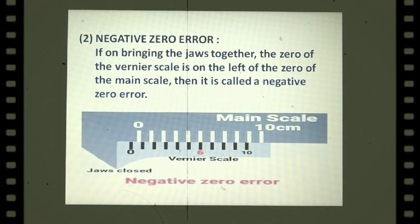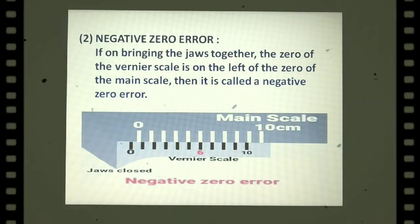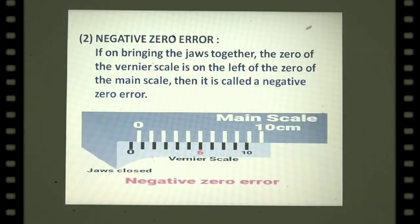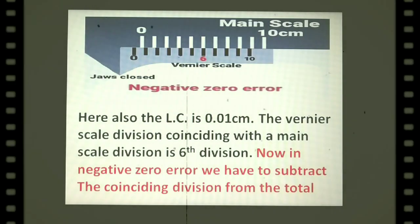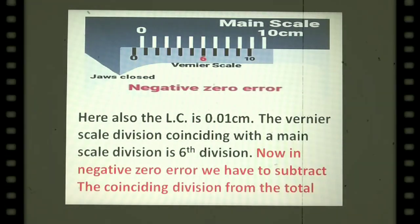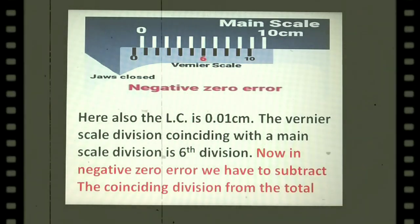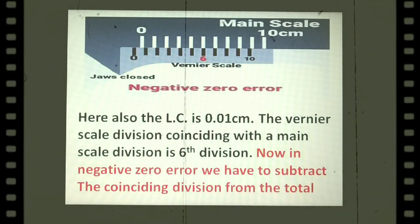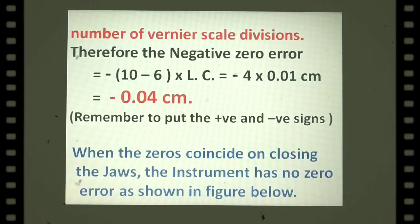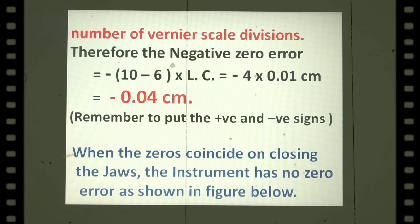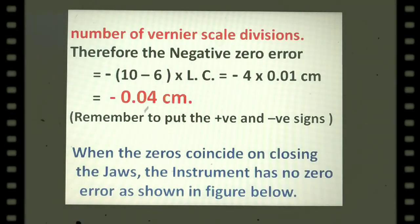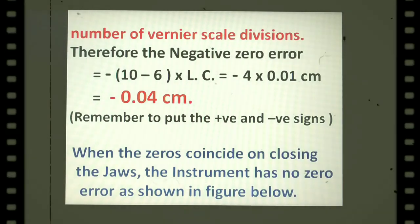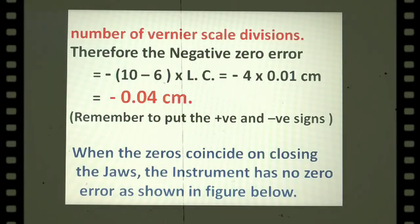Negative zero error: if on bringing the jaws together the zero of the vernier scale is to the left of the zero of the main scale, it is called a negative zero error. From the figure, the least count is again 0.01 cm. The coinciding vernier division is the sixth. For negative zero error, subtract the coinciding division from the total number of vernier divisions: 10 minus 6 equals 4. So the negative zero error equals minus 4 times 0.01 cm, giving minus 0.04 cm.